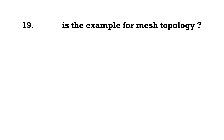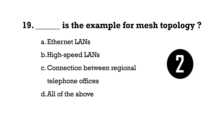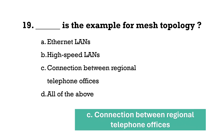Which is an example of mesh topology? Option C — the connection between regional telephone offices is an example of mesh topology.